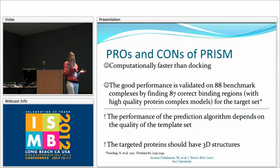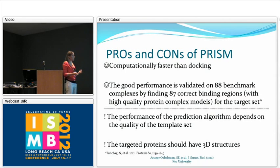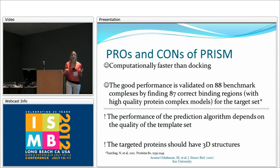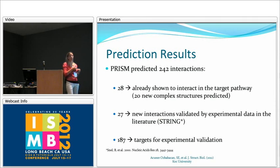Before going to the results, I want to mention the pros and cons of our method. The main advantage is that it is computationally faster than docking, especially at large scale. Its good performance was previously validated on 88 benchmark complexes, finding 87 of the binding regions correctly. Limitations include that performance depends on the template set used, and because this is a structural method, target proteins must have 3D structures.